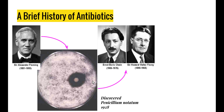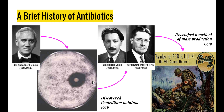Then along came Ernst Chain, a German biochemist, and Howard Florey, an Australian pharmacologist. In 1939 they developed a method to mass produce penicillin, which meant penicillin could be produced in levels sufficient to be shipped out, especially during the Second World War. This stopped a lot of soldiers dying from infections they normally would have died from in the battlefields, as they were suffering from mass infections that ate away at their systems and caused them to die.